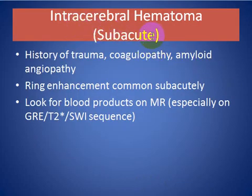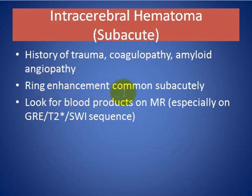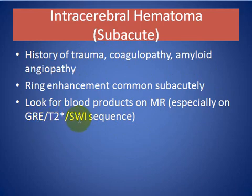Intracerebral hematoma: usually subacute phase will enhance. History of trauma, coagulopathy, or amyloid angiopathy. Ring enhancement commonly seen in the subacute stage. Look for blood products on MRI, especially on gradient echo, T2-star, or susceptibility-weighted imaging sequences.